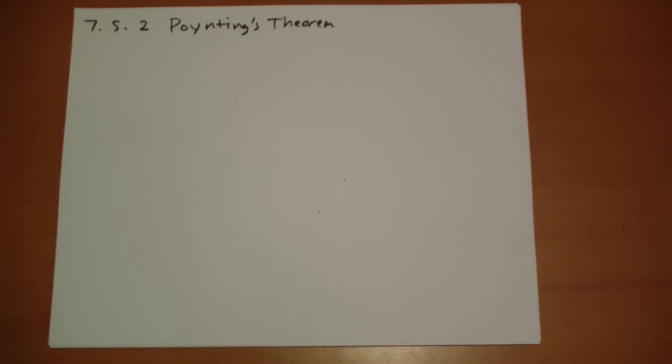Hi, this is Jonathan Gardner. This is problem 7.52, Poynting's Theorem, from Griffiths' Introduction to Electrodynamics, Second Edition.